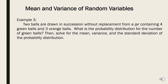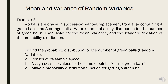Example number 3: Two balls are drawn in succession without replacement from a jar containing 4 green balls and 3 orange balls. We need to find the probability distribution for the number of green balls, then solve for the mean, variance, and standard deviation. Since there are only two kinds of balls, we first construct the sample space, assign possible values, and create a probability distribution table.